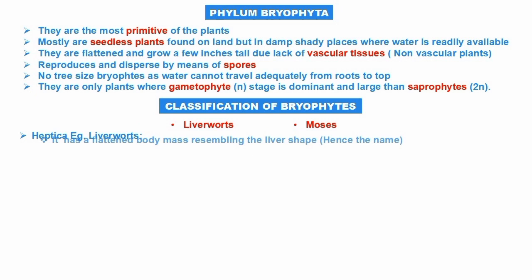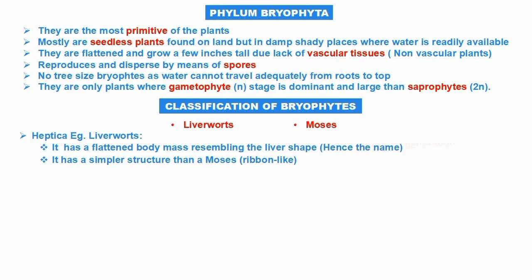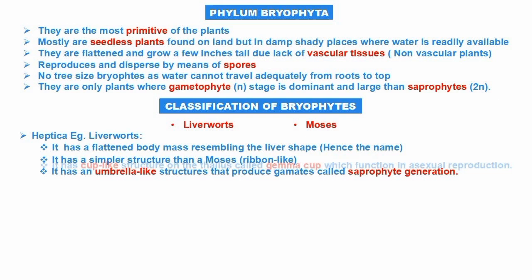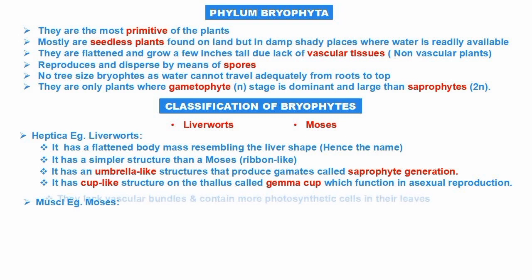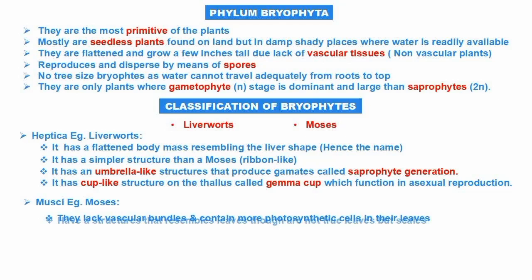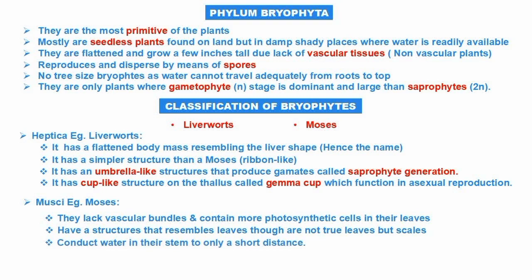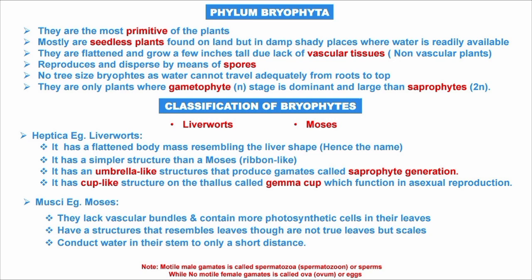Bryophyta has been classified into two groups: liverworts and mosses. Class one is Hepatica, an example of liverworts. It has a flat body mass resembling a liver shape, hence the name. It has a simpler structure than mosses — some say a ribbon-like, flat body. It has an umbrella-like structure that produces gametes called the sporophyte generation, and a cup-like structure on the thallus called gemma cups which functions in asexual reproduction.